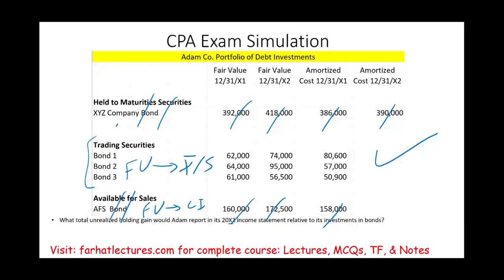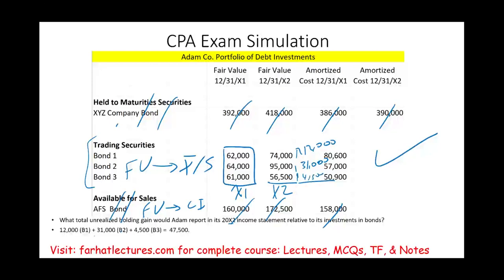For year X2, we compare the fair value of X1 to the fair value of X2 for each trading security — that increase or decrease goes to the income statement. The first bond went up by $12,000. The second security went from 64 to 95, an increase of $31,000. The third security went up by $4,500. Adding up the changes for bond 1, bond 2, and bond 3, the total change reported on the income statement is $47,500.